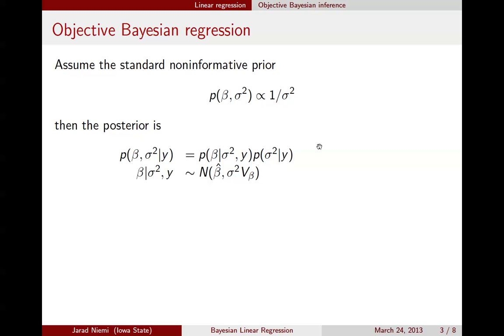The conditional distribution for beta given sigma squared has a normal distribution with some mean and variance, where the variance here is multiplied. The variance-covariance matrix v_beta is multiplied by the actual value for sigma squared. And the marginal posterior for sigma squared is an inverse gamma with these parameters, or equivalently an inverse scaled chi-squared distribution.